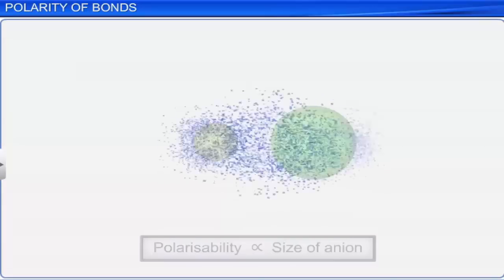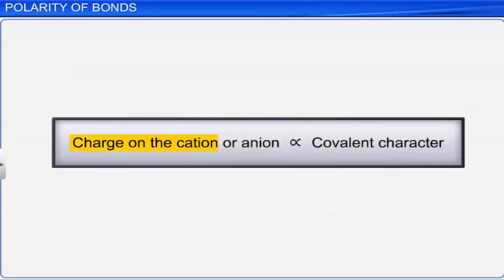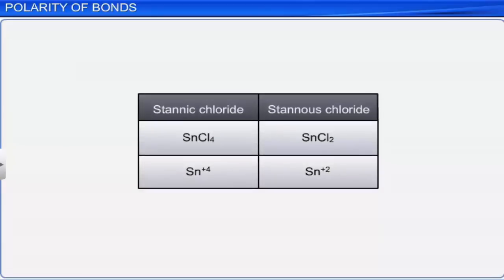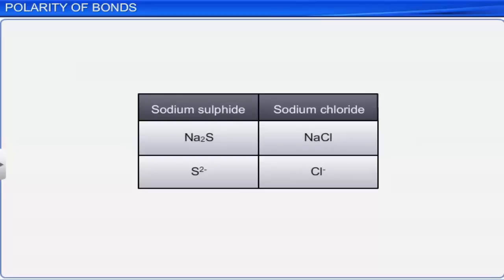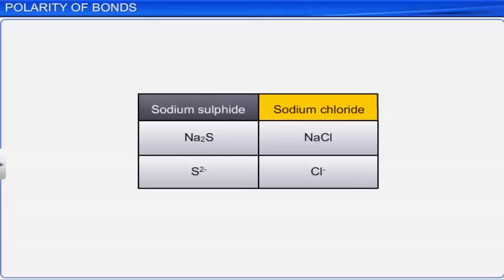The larger the charge on the cation or anion, the greater is the covalent character of the ionic bond. For example, stannic chloride is more covalent than stannous chloride because the charge on tin in stannic chloride is 4 while it is 2 in stannous chloride. On the other hand, sodium sulfide is more covalent than sodium chloride because the charge on the sulfide ion is greater than the charge on the chloride ion.